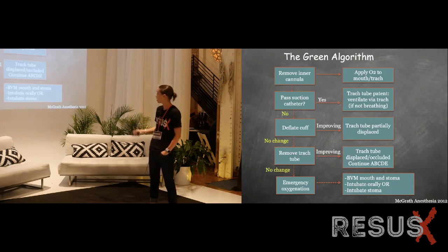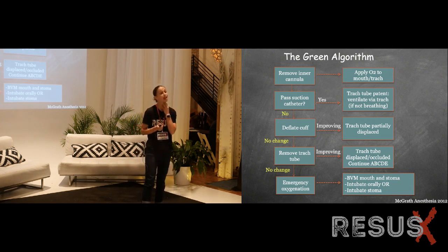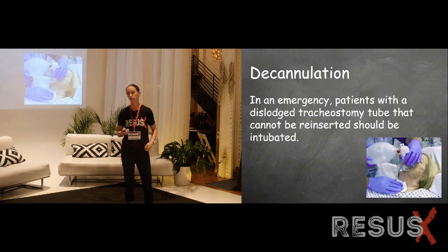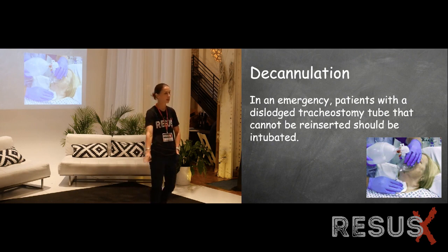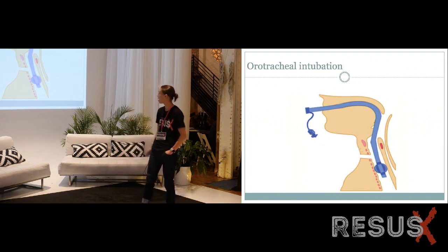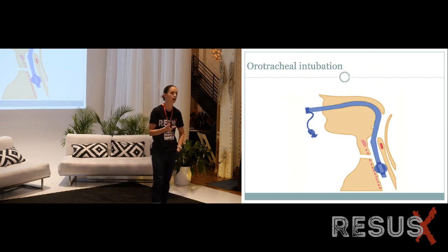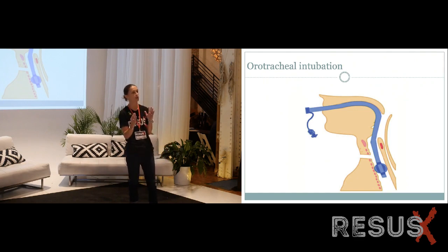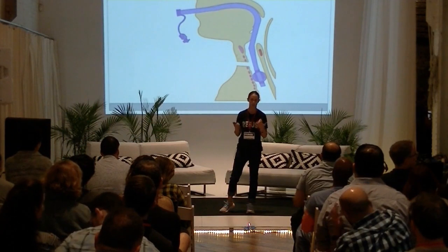Now we need to intubate. In the standard trach patient, you have two choices: orotracheally intubate, or intubate the stoma with either an ET tube or a trach tube. That's why when any trach patient comes in — no matter how stable — get a backup trach to the bedside. If you choose orotracheal intubation from above, pass the tube as you normally would with the cuff below the level of the stoma, then cover the stoma with Vaseline gauze. Once stabilized, call the physician who placed it — ENT, trauma, or interventional pulmonary — because even with a mature stoma, it closes 50% in the first 12 hours and 90% within 24 hours. You have a very short window for the surgeon to reinsert the trach tube.